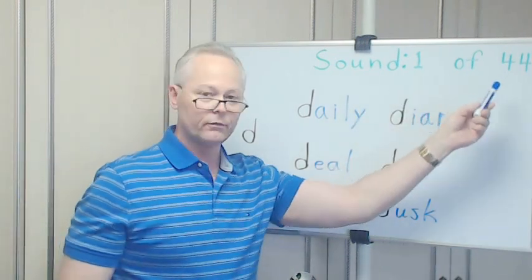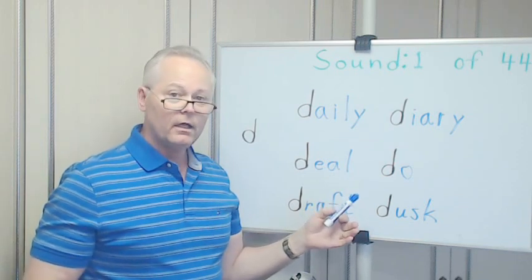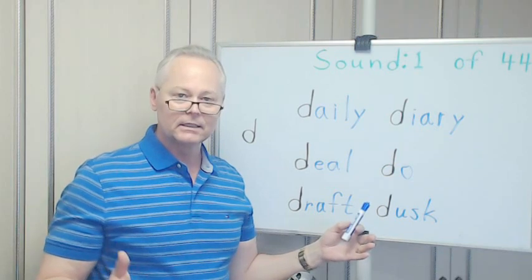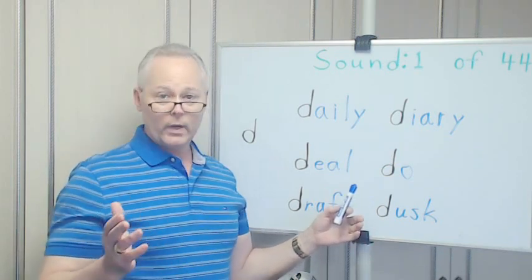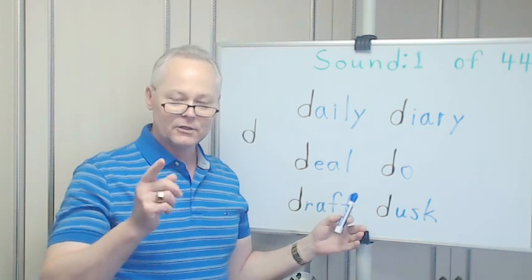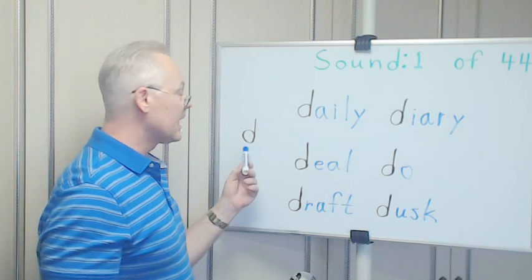Now, the first 24 sounds we're going to look at are based on consonants. The last 20 are going to be vowels. Let's begin here with our first sound. The sound is simply the D sound.